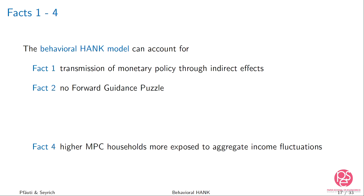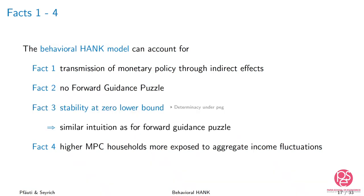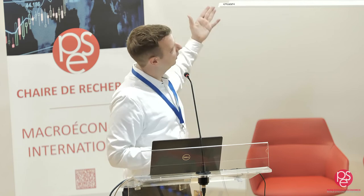I don't have time to talk about it today, but we also show that the model is stable at the zero lower bound — we get determinacy under an interest rate peg. The intuition is similar to the forward guidance case: the zero lower bound is like a contractionary forward guidance. As the period of the lower bound increases, you get an implosion of the output gap in rational models, which is not the case when you have the behavioral friction.